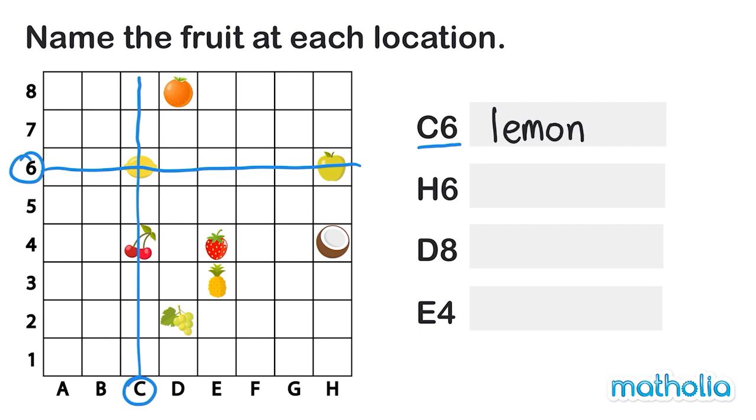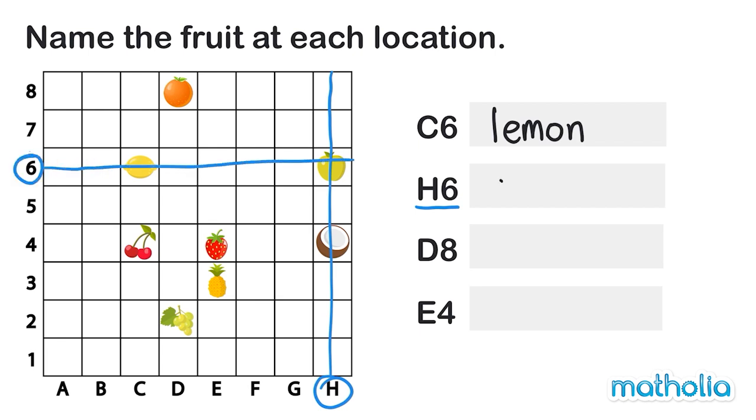The next grid location is H6. Looking up column H and across column 6, we can see that they meet at the apple. So an apple is at H6.